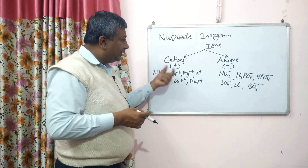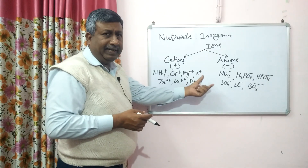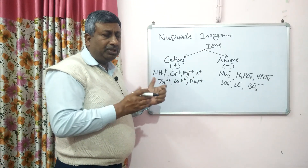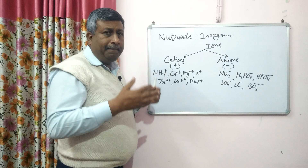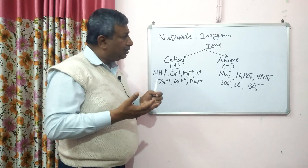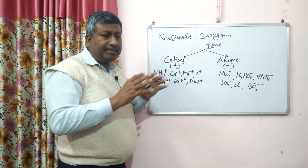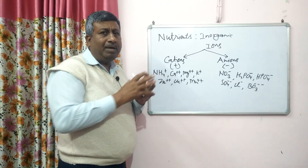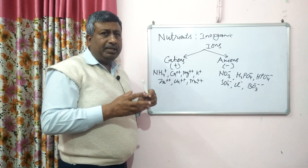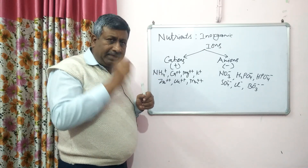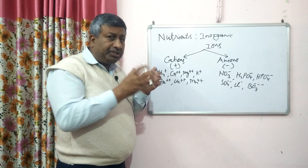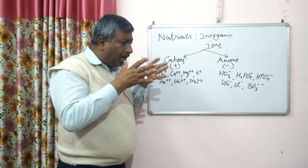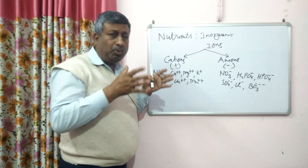Plants absorb either cations or anions. Nutrients must be in ionic form in the soil solution before the plant can absorb them.